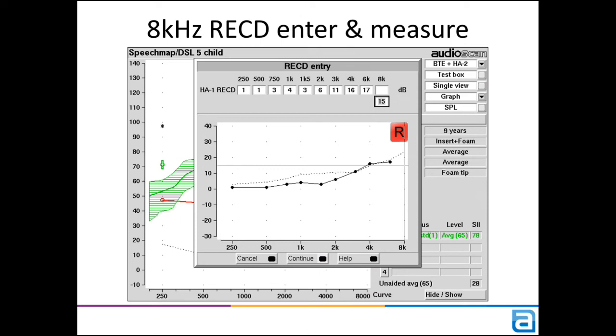An important note, if you have a 9-point measured RECD from current software, they'll still be valid in the updated software. The entry screen will accept an empty field for 8 kHz if you don't have it, and automatically do a straight line interpolation before you run SpeechMap.